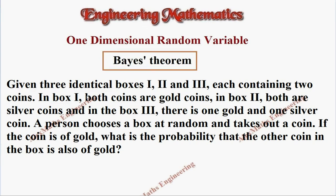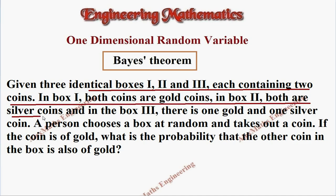The question they have given, there are 3 identical boxes, 1, 2, 3, each containing 2 coins. In box 1, both are gold coins. In box 2, both are silver coins. And in box 3, there is 1 gold and 1 silver. We are going to write this separately.